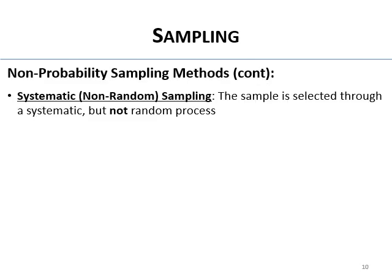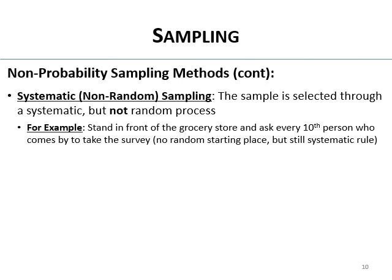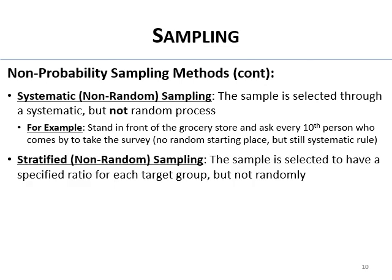Then there's systematic non-random sampling — the sample is selected through a systematic but not random process. You start at a place, but not a random place, and then use a rule to pick people. For example, you stand in front of a grocery store and ask every 10th person who comes by to take your survey. You didn't start at a random place, but you followed a systematic rule — that's systematic non-random sampling.